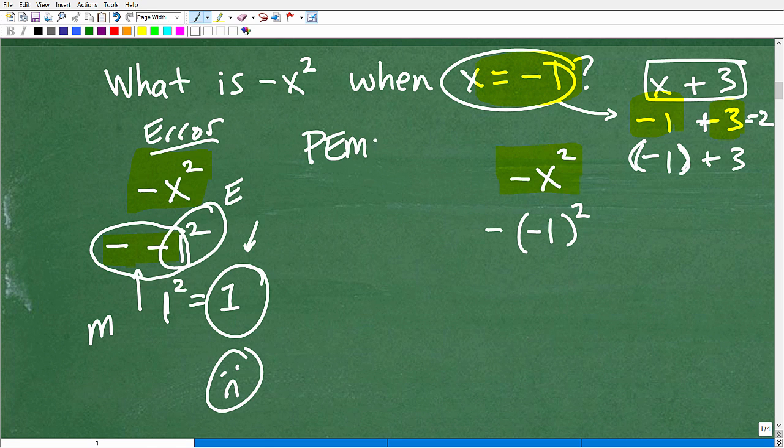PEMDAS, right? Parentheses, then exponents, and then multiplication or division. So when we're looking at what's going on here, we have a power or exponent and multiplication. This is multiplication. This is a power. So we have to do this part first. And this little negative here is really like a negative 1. So let's go ahead and do that.